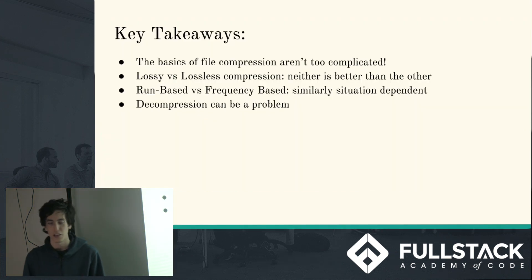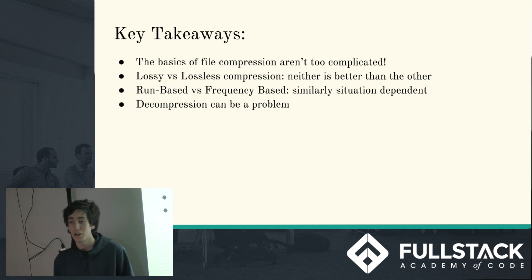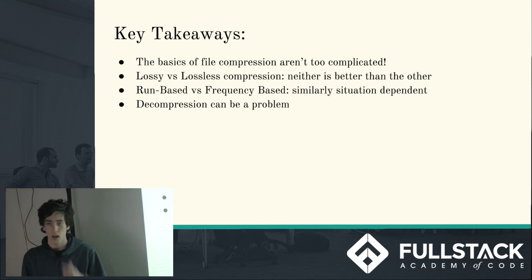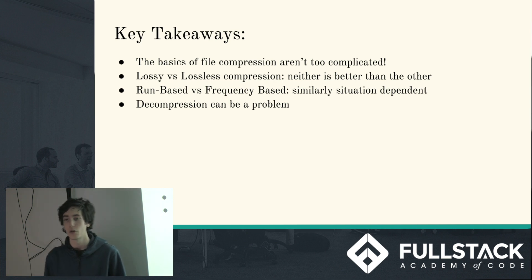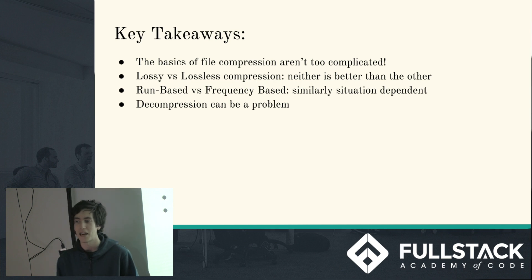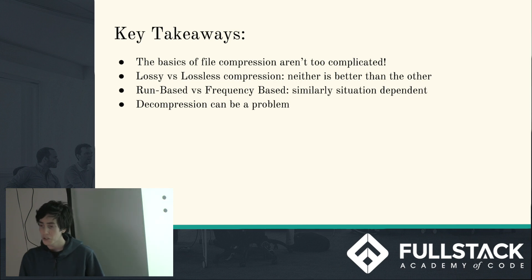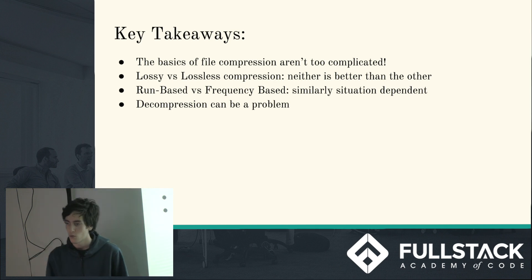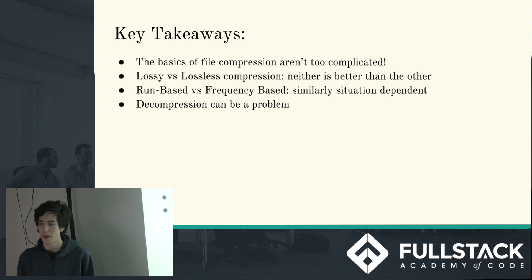A couple of key takeaways: the basics of file compression really aren't that complicated. Huffman encoding is easily doable — the implementation is generally less than 50 lines of code for alphanumeric. If you need to compress a file, it can be nice to implement your own file compression so you can see exactly what's going on. As far as lossy versus lossless, neither is better than the other — they both have their use cases. Run-based and frequency-based approaches are similar and very situationally dependent. And decompression is generally where your problems crop up.